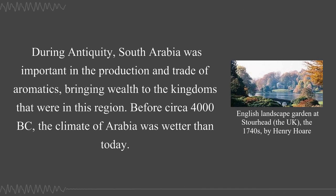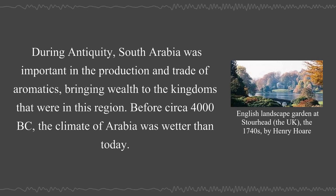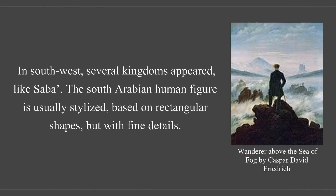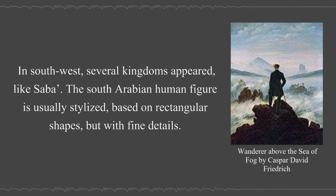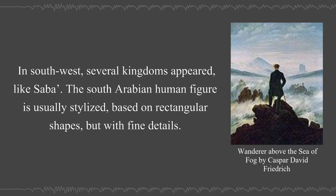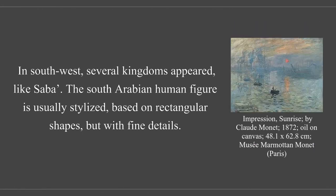Before circa 4000 BC, the climate of Arabia was wetter than today. In the southwest, several kingdoms appeared like Saba. The South Arabian human figure is usually stylized based on rectangular shapes, but with fine details.